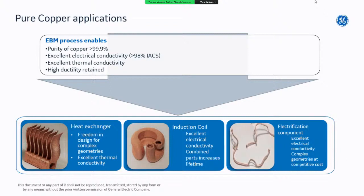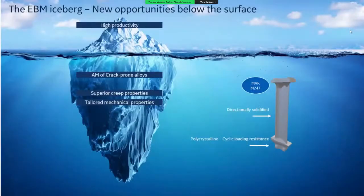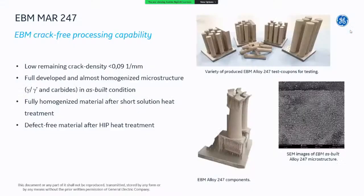Another opportunity is Mar-M247, a nickel-based superalloy that is typically very crack-prone and hard to manufacture with conventional additive manufacturing. With EBM, we have been able to produce this material with low crack density, achieving a fully developed and homogenized microstructure, with very limited need for solution heat treatment. With hot isostatic pressing, completely defect-free material can be achieved.